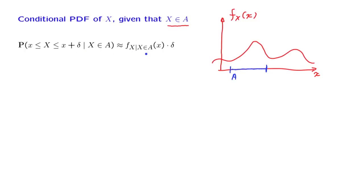If we're dealing with conditional probabilities, then we use the corresponding conditional PDF. To find the form of the conditional PDF, we will work in terms of the left-hand side of this equation and try to rewrite it.